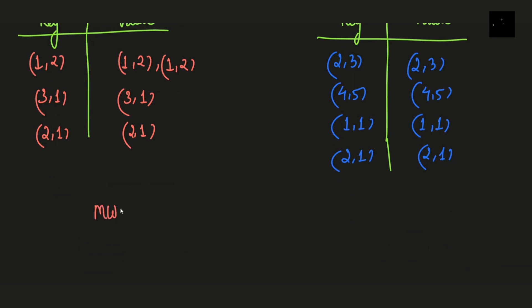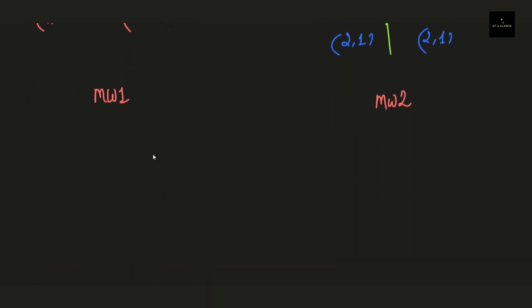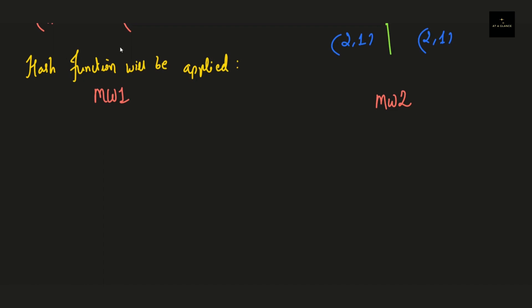Now let's move on to the next step. In this step we'll be applying a hash function to the result we have got from the previous step. After applying the hash function, the key-value table created for every MapWorker will be divided into two. Therefore, each MapWorker will be having two key-value tables. The first half of the records will be placed in the first key-value table and the second half in the next key-value table. Similarly for the other MapWorker also.